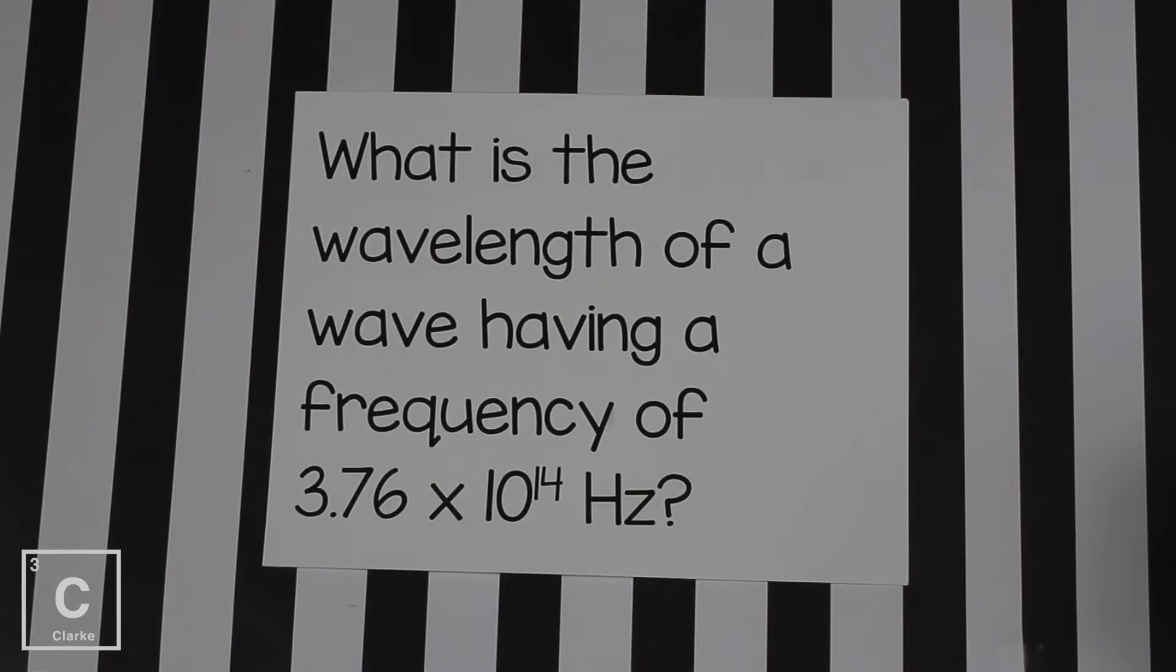Our first example of a wave problem states, what is the wavelength of a wave having a frequency of 3.76 times 10 to the 14 Hertz? It's important to label your given. We have a frequency of 3.76 times 10 to the 14 Hertz.